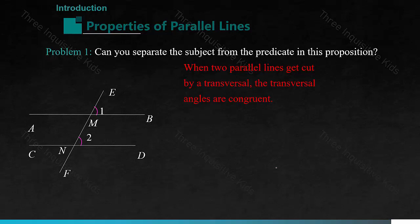Here the subject is: when two parallel lines get cut by a transversal, so we already know that the lines are parallel. The predicate or the conclusion is: the transversal angles are congruent. Think about the if-then statement we learned earlier on in this chapter. If two parallel lines get cut by a transversal, then the transversal angles are congruent.